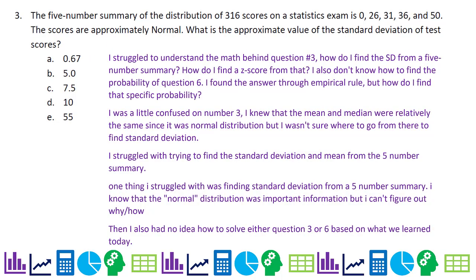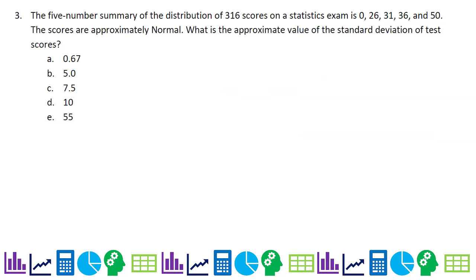Number three: the five-number summary of 316 scores on a statistics exam is 0, 26, 31, 36, and 50. The scores are approximately normal. What is the approximate value of the standard deviation? This throws a lot of students off. The key is to recall that Q1 and Q3 — not 0 and 50 — can be used here. We'll use the median (31) to approximate the mean since the distribution is approximately normal.